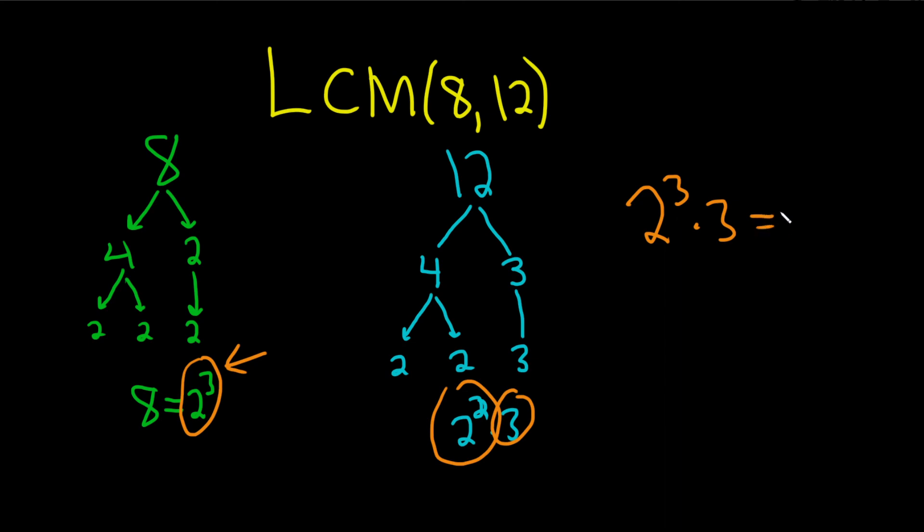That's 8 times 3. So the answer is 24. 24 is the least common multiple of 8 and 12. Good luck.